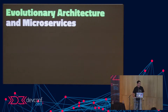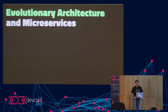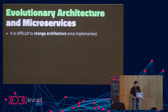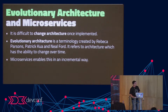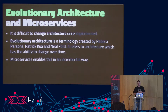There's a concept called evolutionary architecture. My advice when splitting up a monolith is to think of it almost like a slab of marble — you're going to chip away at it incrementally instead of doing it all at once. Once you've implemented architecture, it's very hard to change. Evolutionary architecture is a terminology created by Rebecca Parsons, Patrick Kerr, and Neil Ford — it refers to architecture which has the ability to change over time. Microservices enable this in a very incremental way: if we want to add something new, we can simply add a new microservice or take one away.